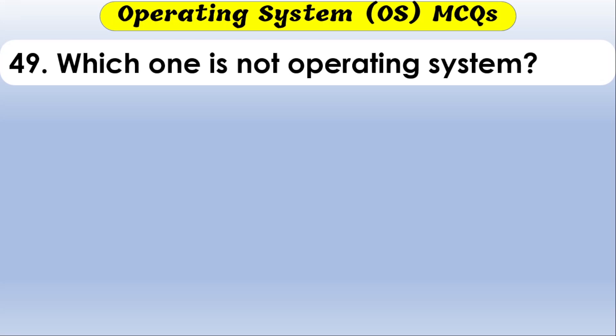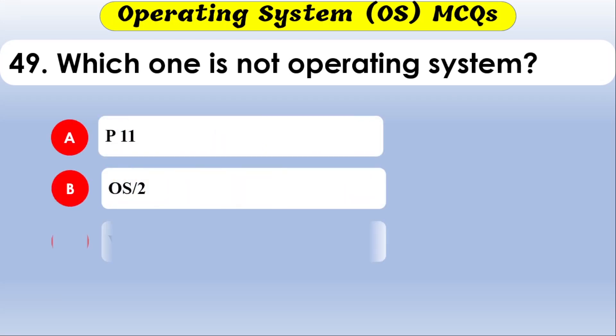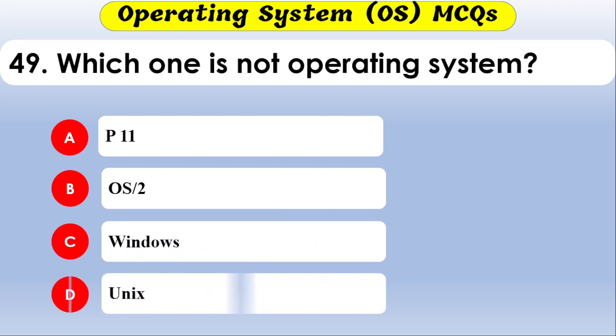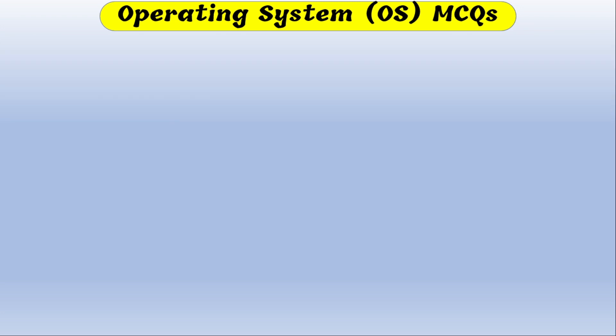Which one is not an operating system? The options are Windows, Linux, and all of the above. The correct option is all of the above — all options listed are operating systems, so none is 'not' an OS.